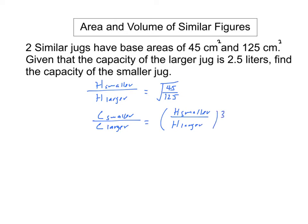Because in this case, the capacity is taken to be the volume. So from here, we will have the square root of 45 over the square root of 125, all cubed.